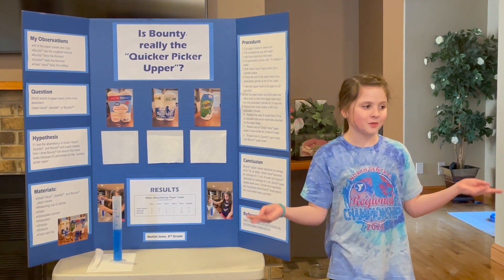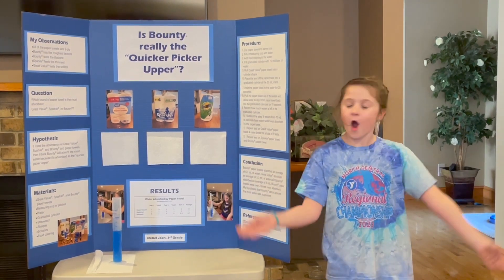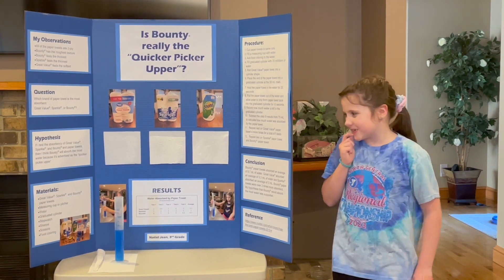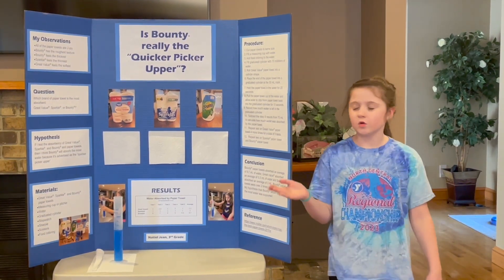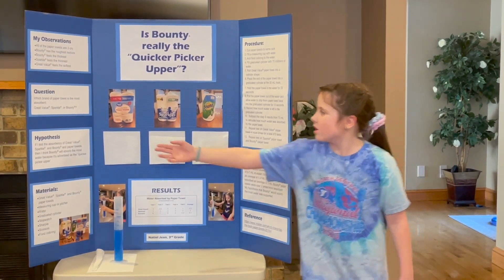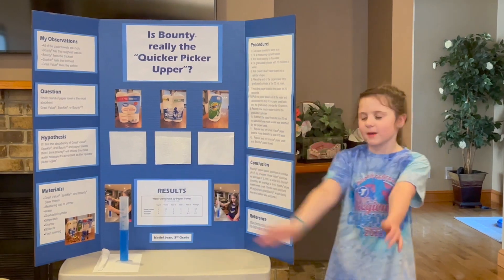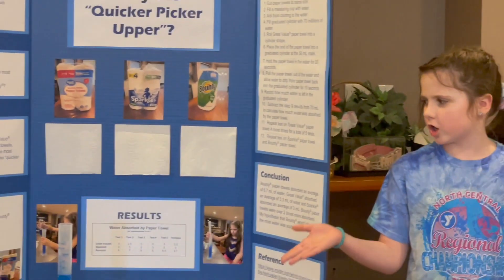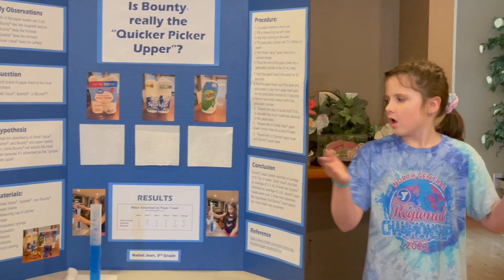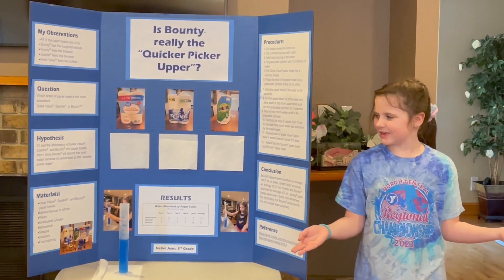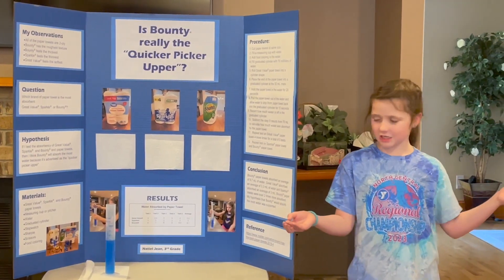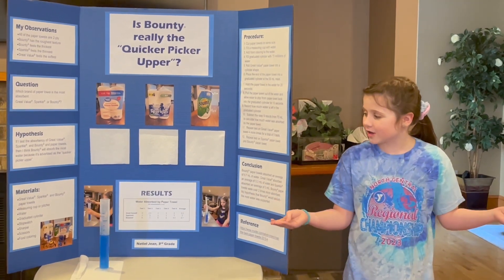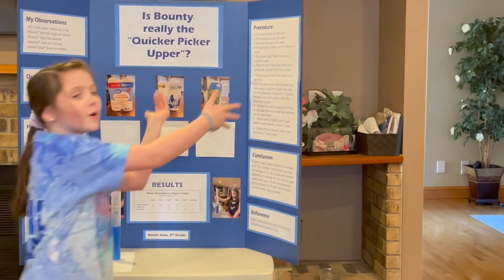If you'd like to do this experiment at home, here are the materials you're going to need: Great Value, Sparkle, and Bounty paper towels, a measuring cup or a pitcher, water, a graduated cylinder, stopwatch, sharpie, scissors, and food coloring.